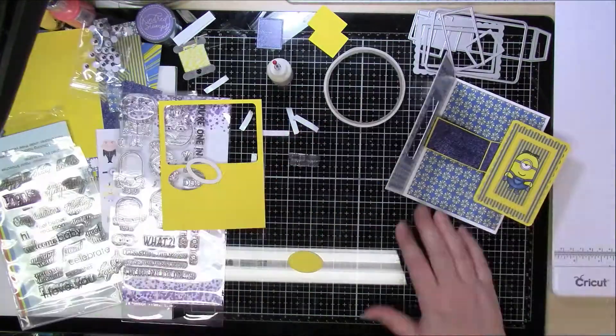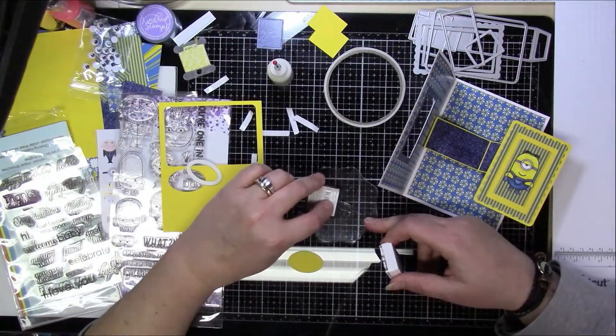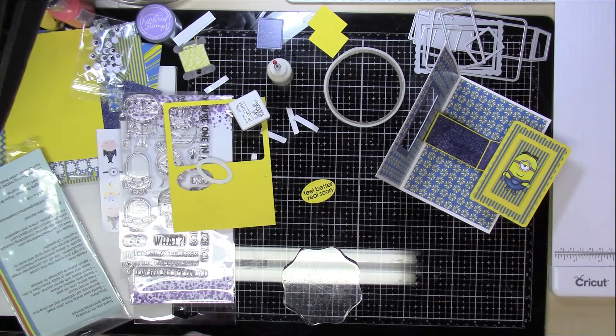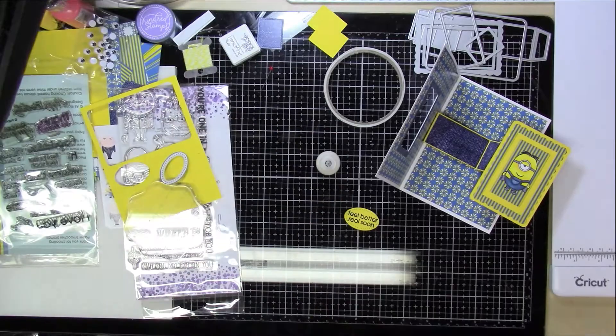And that's it. That is how that whole mechanism works. And the rest of this is really just decorating, adding your sentiments, what you want to do, and how you want to do it. Like I said, I ended up cutting out that oval that's part of the die set to stamp Feel Better Real Soon.